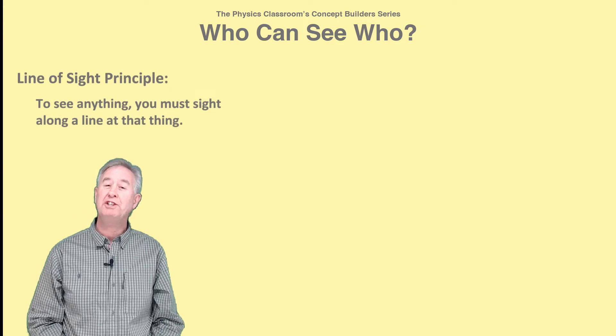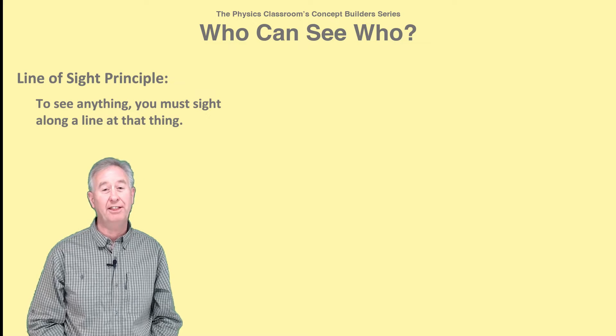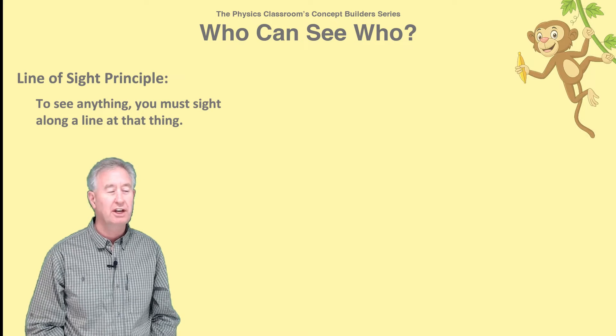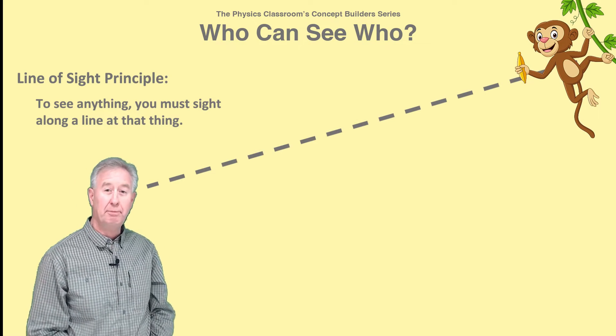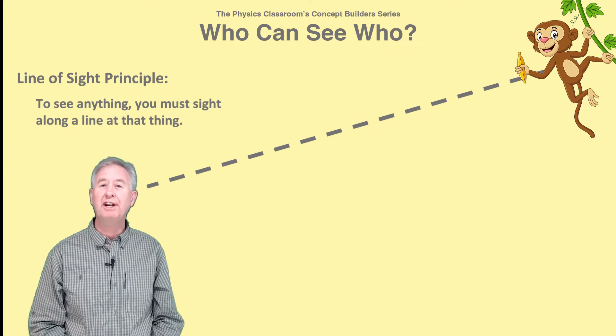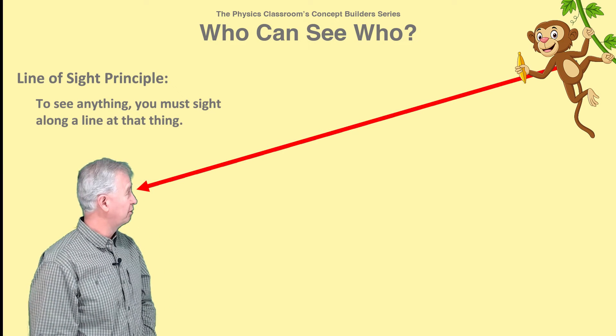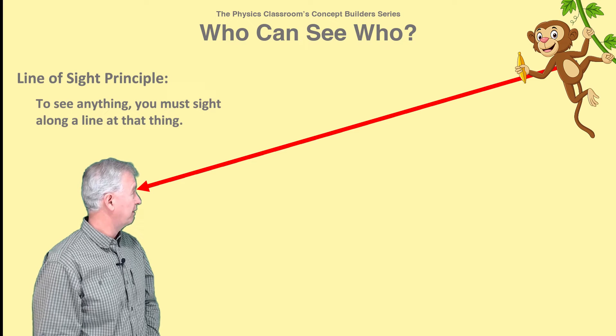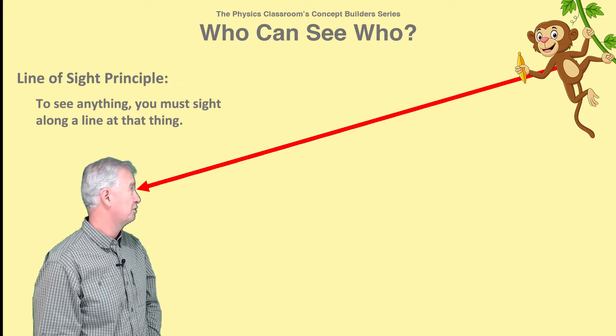In order to see anything, you must sight along a line at that thing. For instance, in order to see the monkey up there in the corner, I have to sight along a line at the monkey. And when I do, light from the monkey will travel along my line of sight to my eye.